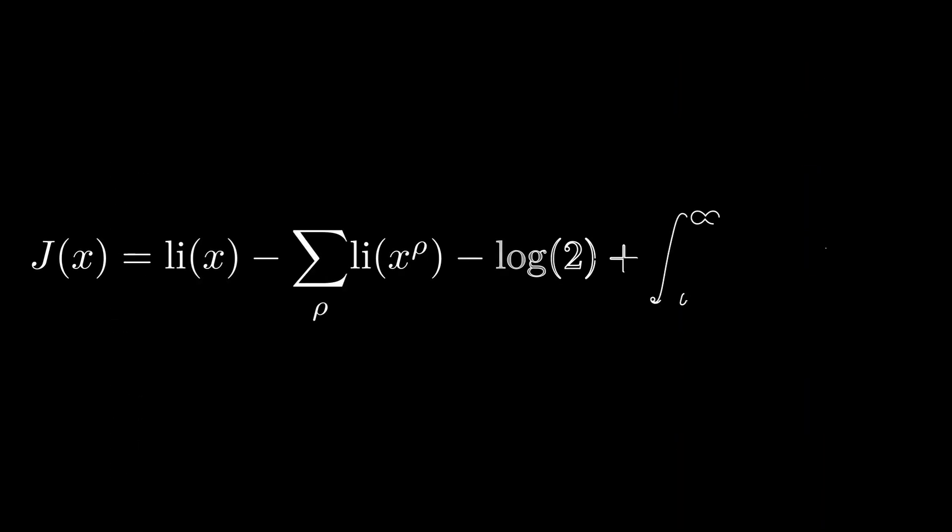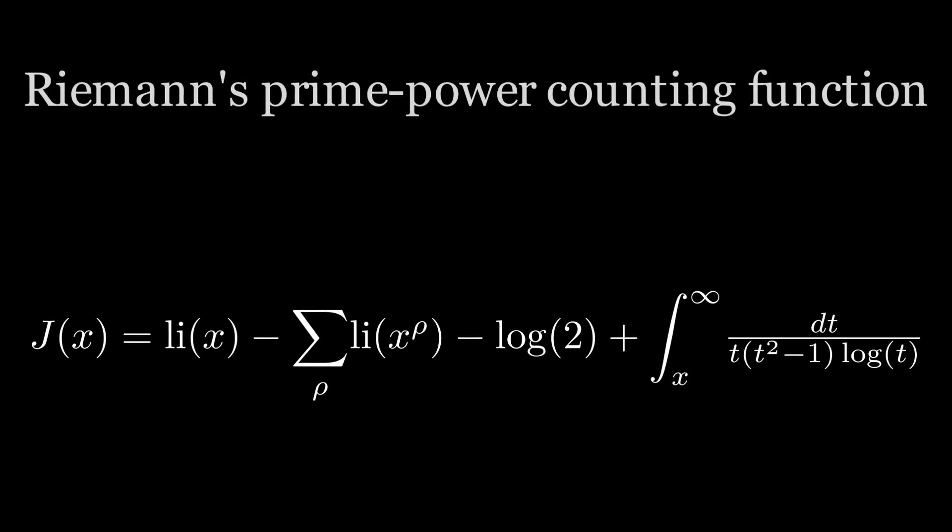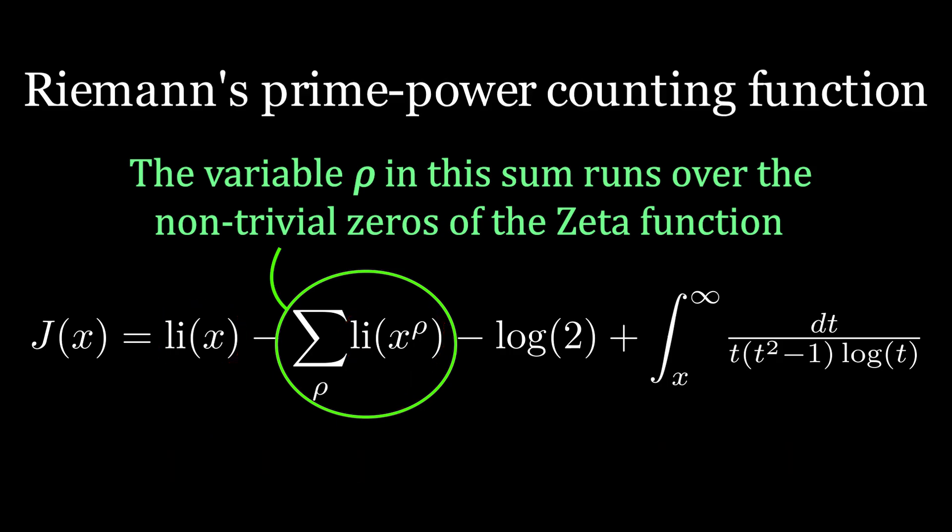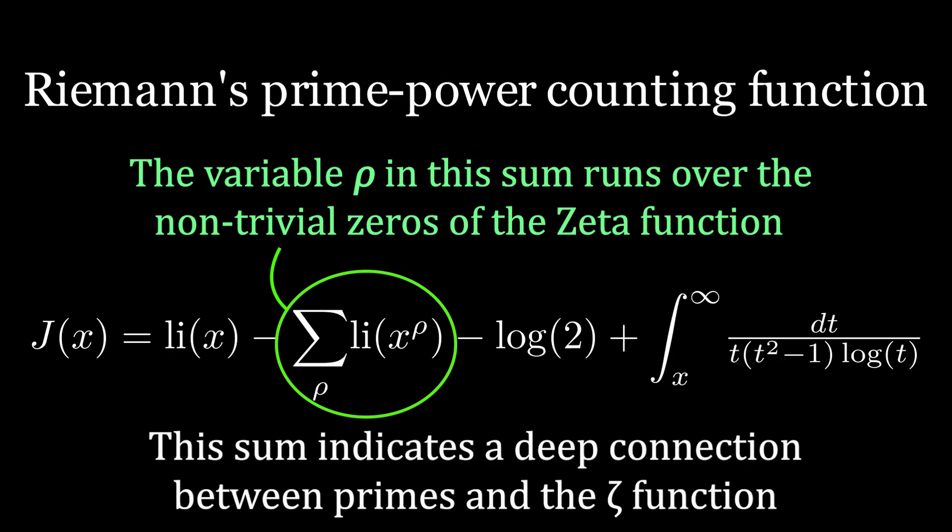In this equation for J of x, there's a sum which involves the non-trivial zeros of the Riemann zeta function. From this expression, we can essentially see why the Riemann hypothesis is connected to prime numbers. The roots of the zeta function dictate the behavior of this sum in the expression for J of x, and J of x is a function that counts prime numbers and their powers up to x.